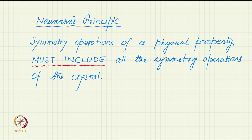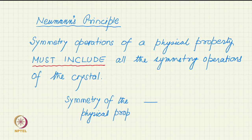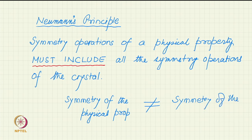However, it does not say that the symmetry of the property is equal to the symmetry of the crystal. The symmetry of the physical property is not necessarily equal to the symmetry of the crystal — it can have more symmetry operations. It must include all the symmetry operations of the crystal, but it may or may not have additional symmetry operations which are not symmetry operations of the crystal. We will see some examples.